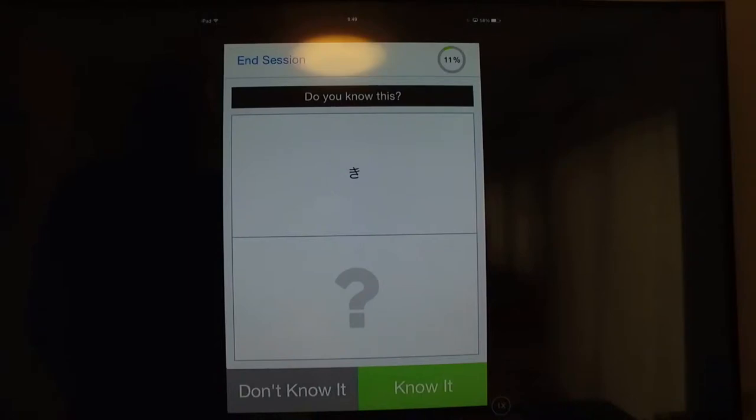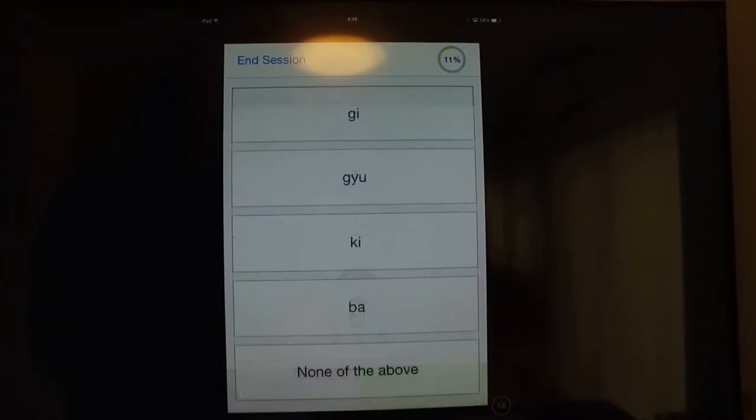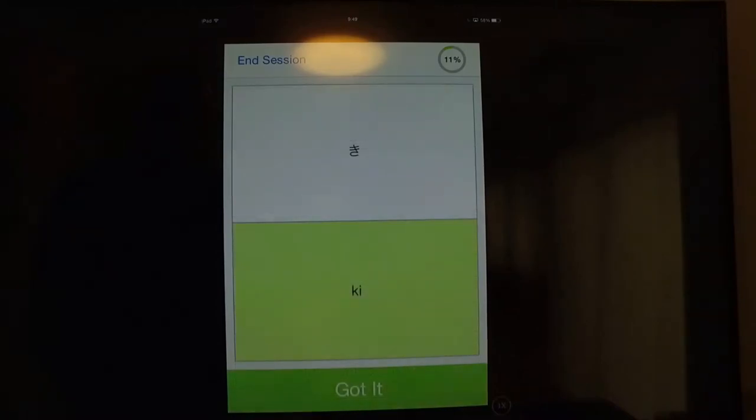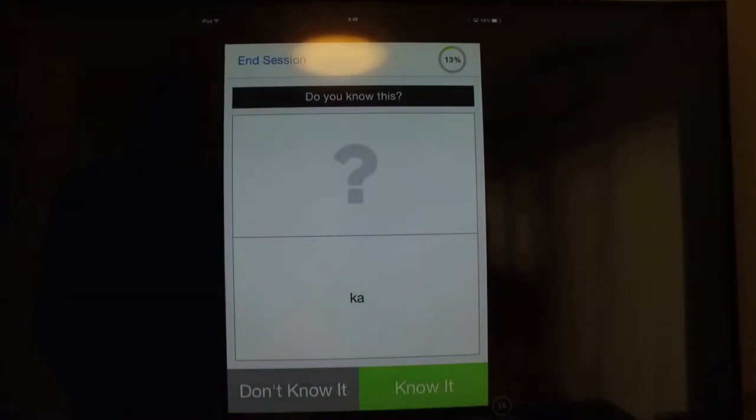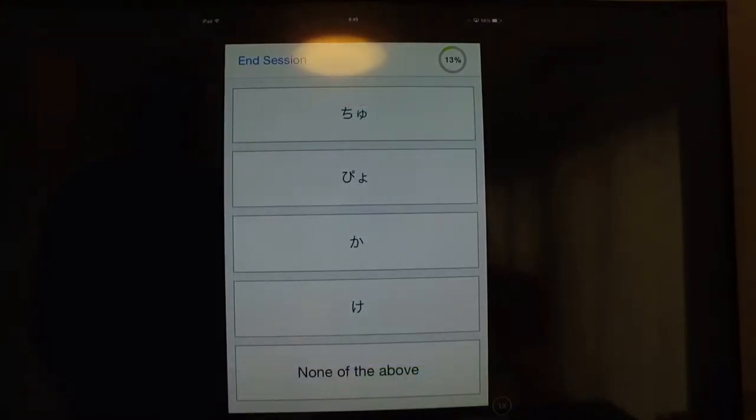All right. And this, do you know it? This is 'ki'. All right, ki. What's this one? I got it. Ki. Do you know what this is? I know it. Which one is it? Can you figure it out which one is it? Yes, it's ka.